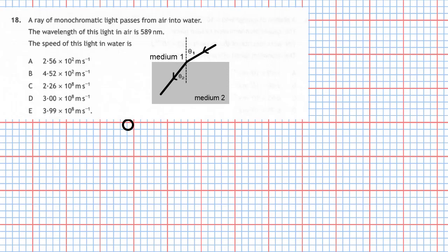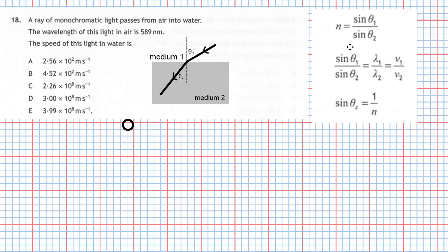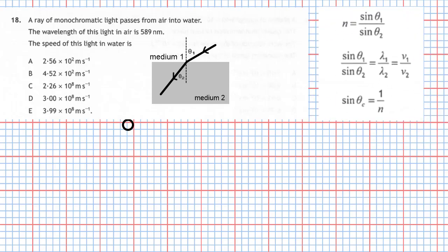We have medium 1 representing the air and medium 2 representing the water, and theta 1 representing the angle of incidence in the air with the normal, and theta 2 representing the angle of refraction with the ray in the water. If we look at equations from the data sheet, there are no angles mentioned in this question so we can't use the angles — it's got to be the refractive index.